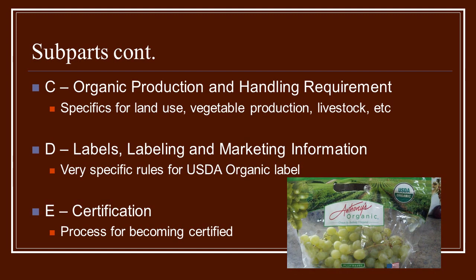Continuing on with the subparts, C has information about organic production and handling requirements — really how you're going to manage your farm. It includes all the rules and regulations for land use, vegetables, and livestock. It is all broken down into what you can do and how you should manage your farm according to the organic rules. When the inspector comes out, these are the things they will be looking at to make sure you're following those rules.